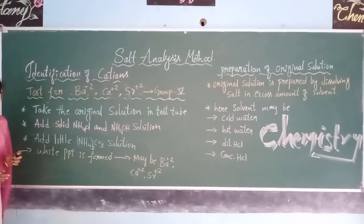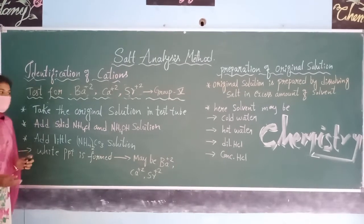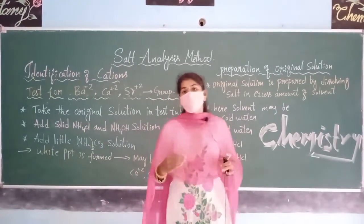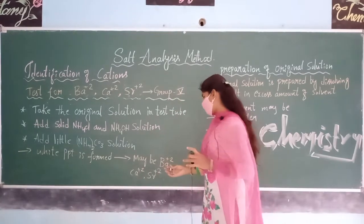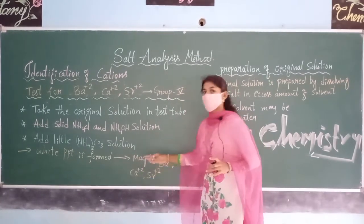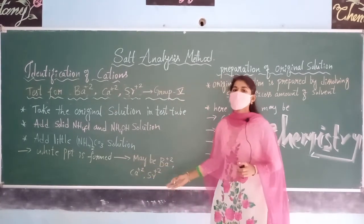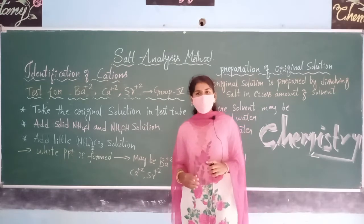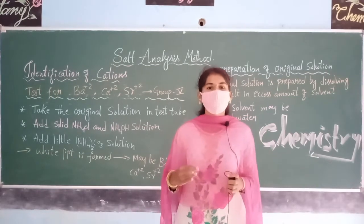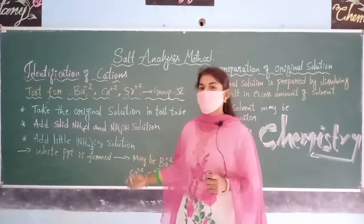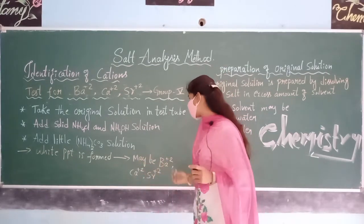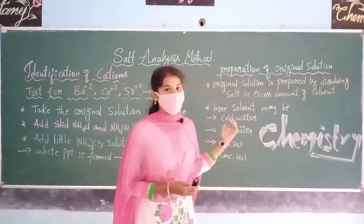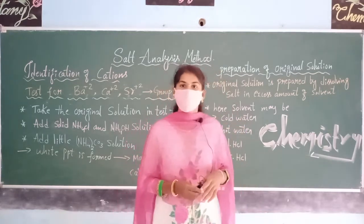After adding these reagents and waiting a few seconds or minutes, a white precipitate will be formed. This white precipitate indicates that the cation barium, calcium, or strontium may be present in the given salt. In this way we can test for these cations using the prepared original solution. Thank you.